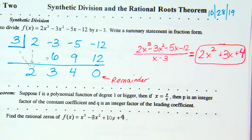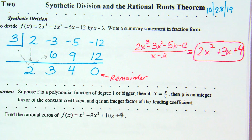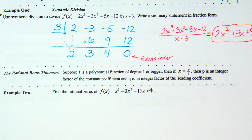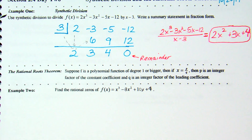Those of you who have seen that before, it seems familiar. Now, rational roots theorem. I know in my class I skimped on this last year, but rational roots theorem says: suppose f is a polynomial function of degree 1 or bigger.